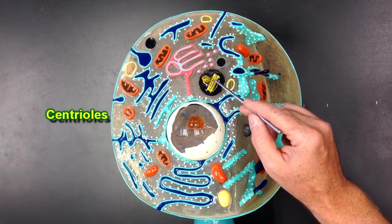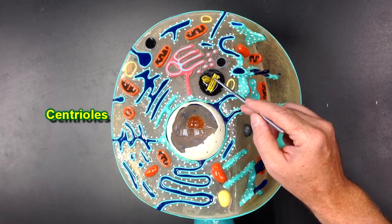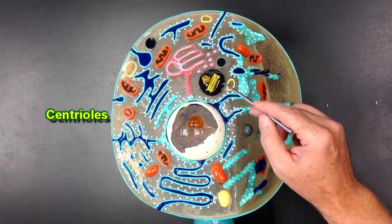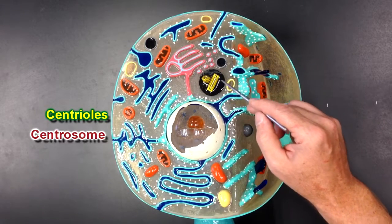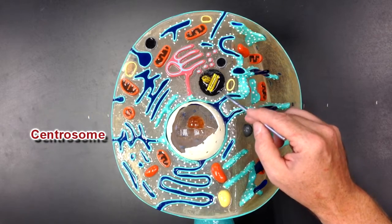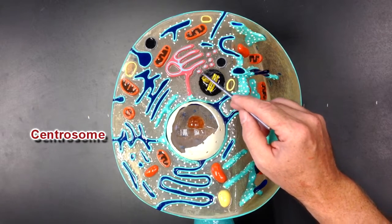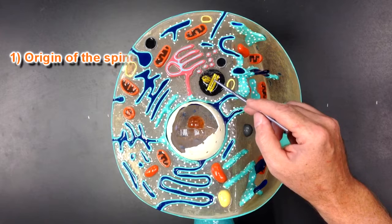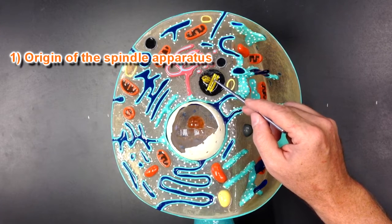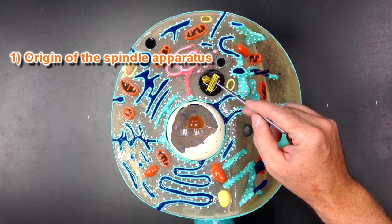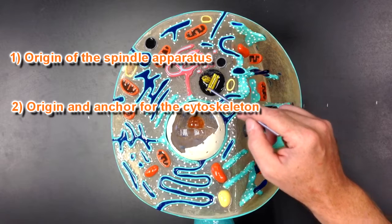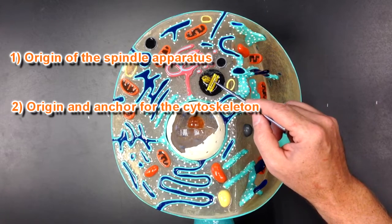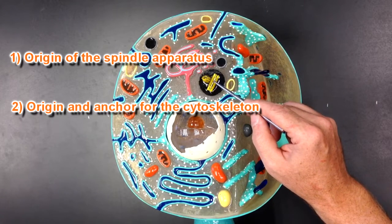Here we can see the centrioles and this darkened area around there would be the centrosome, the cytoplasm around the centrioles. This would be where the spindle apparatus is made for mitosis and also this is where the cytoskeleton originates from and is anchored.